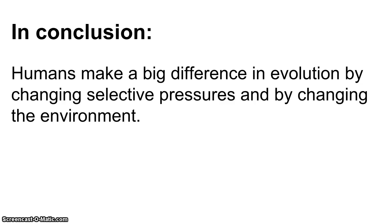To wrap up, those are many different examples, and you could brainstorm even more — think about how else humans are affecting evolution. In conclusion, humans are making a big difference in evolution, which is happening right now, today, because of selective pressures and environmental changes. By changing selection pressures on our own species, we're modifying our own evolution, and by changing the environment, we're affecting evolution in other species. Keep in mind what you're doing with your actions — whether it's getting vaccinated or using antibiotics — you're making a difference in evolution.